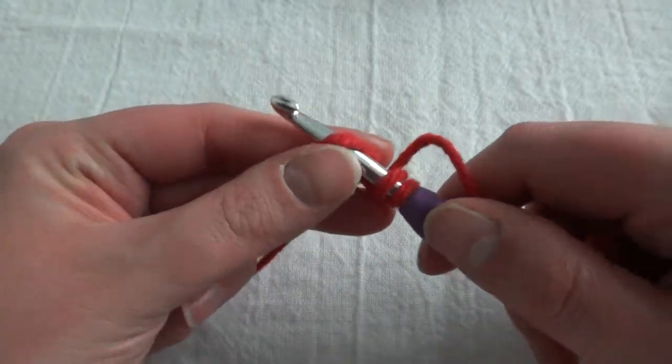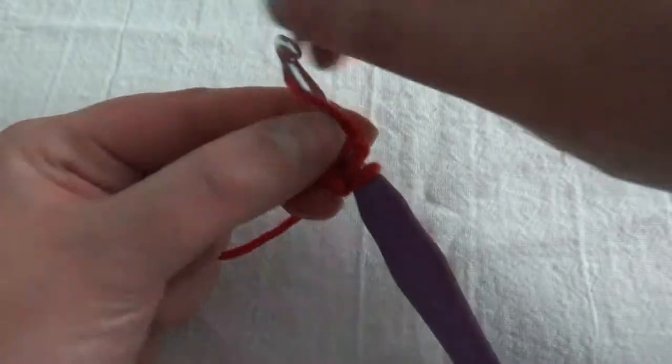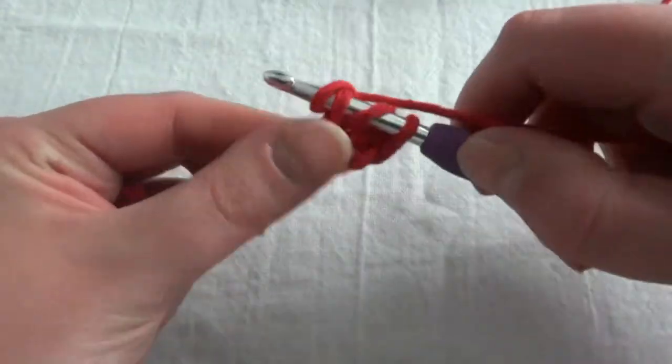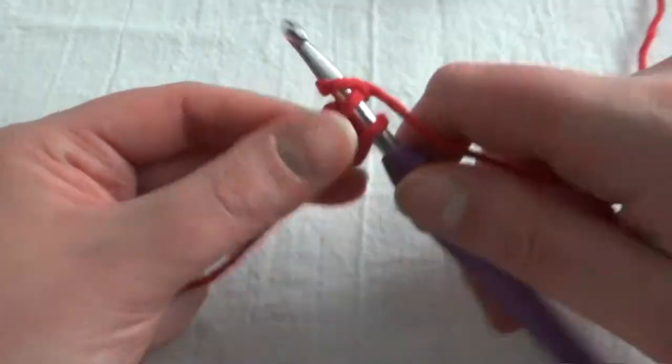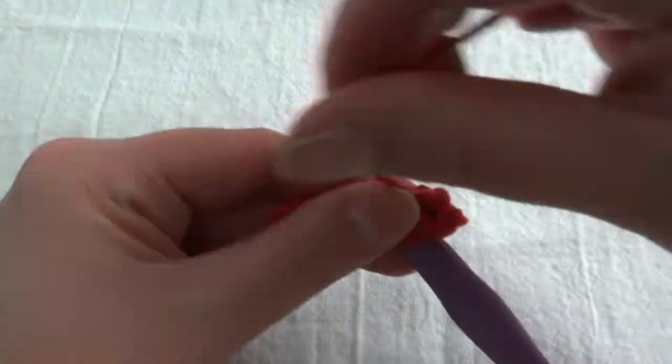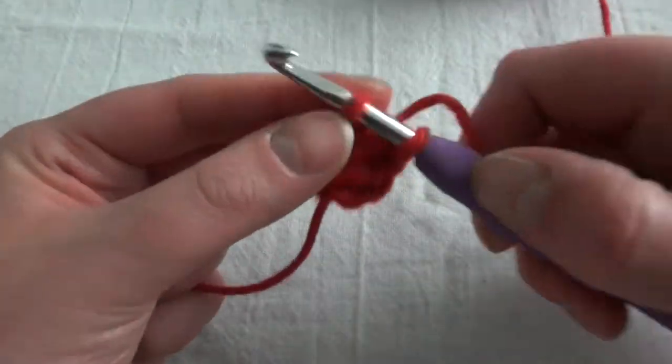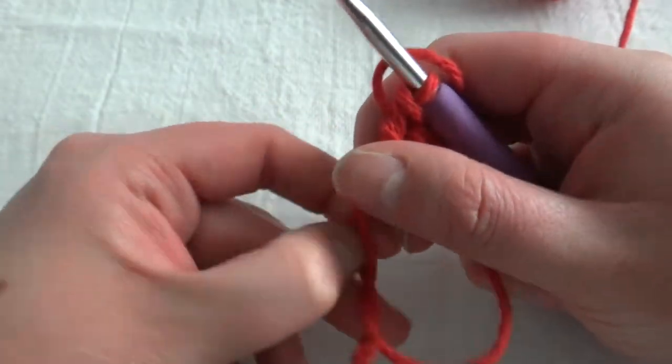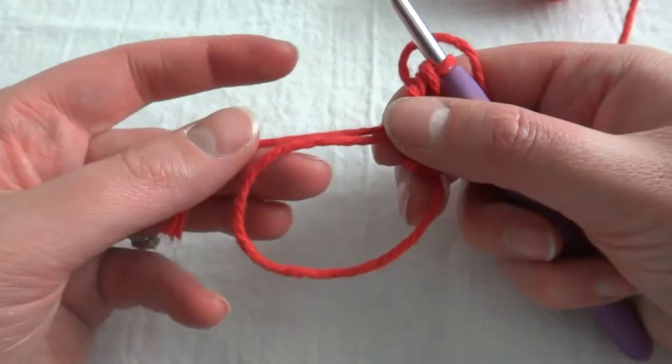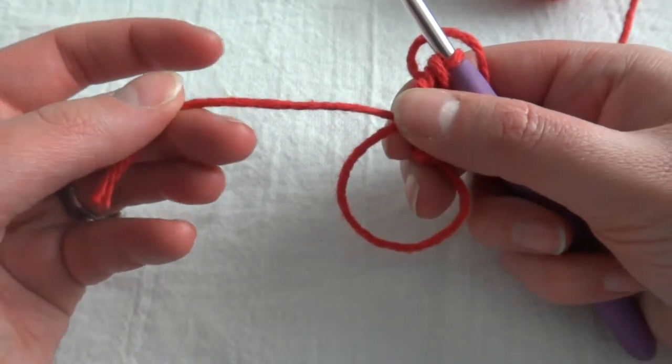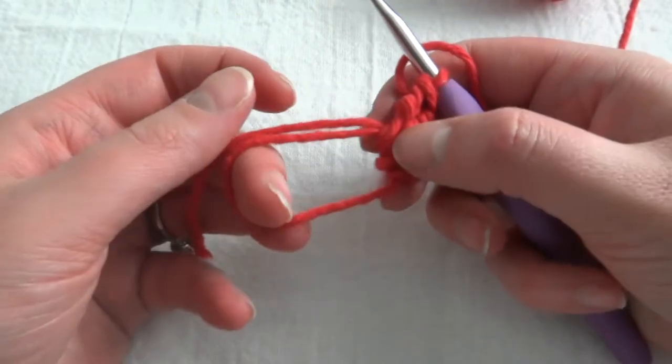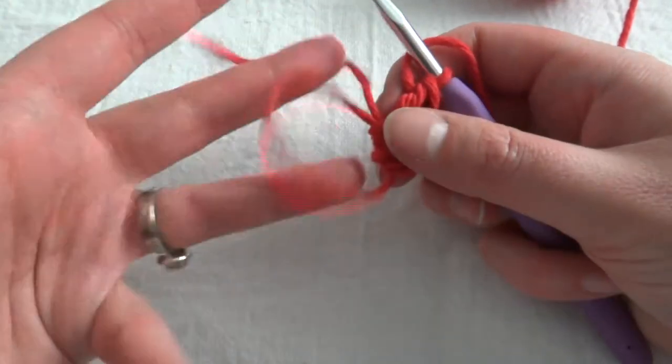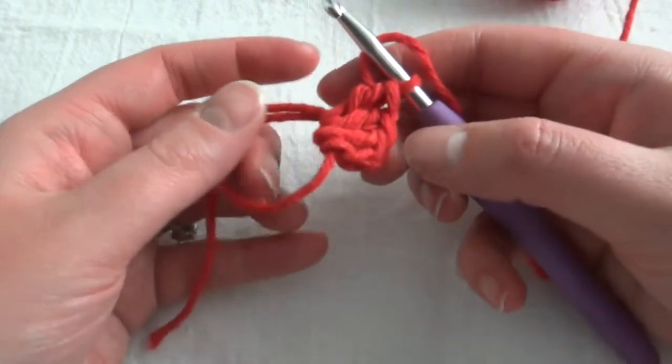So we'll crochet 12 into here. And if you need your loop to be tighter, the magic part about this ring is that you just pull the string and that makes it tighter. So you don't want it to be too tight or your stitches might not fit. But you don't have to have it all floppy there like with your stitches wiggling all over the place.